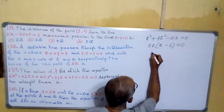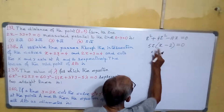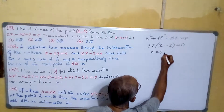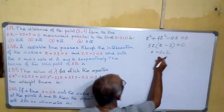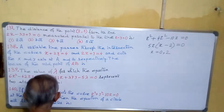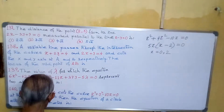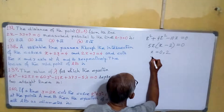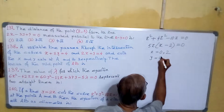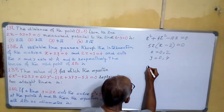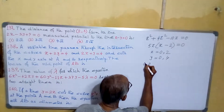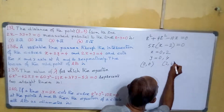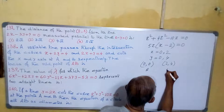So we are getting two values of x. From here x equals to 0, and from here x equals to 2. Using y equals to 2x with these values, we get y equals to 0 and y equals to 4. So the points A and B are (0, 0) and (2, 4).